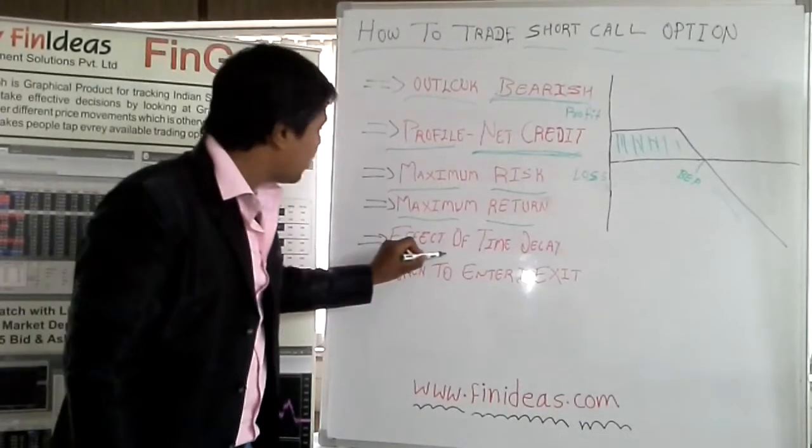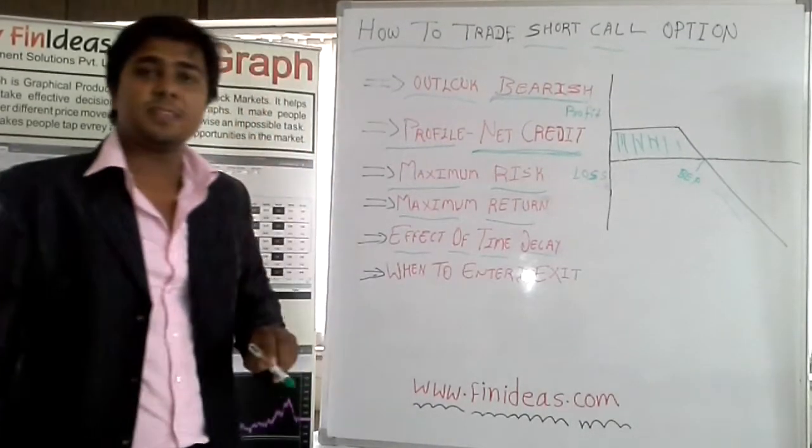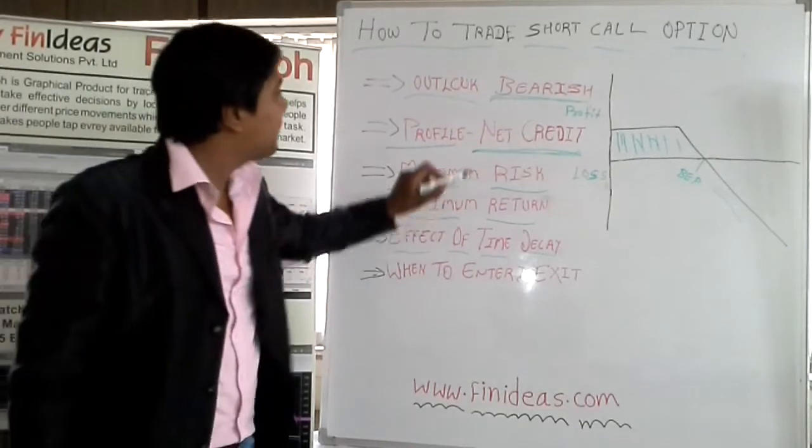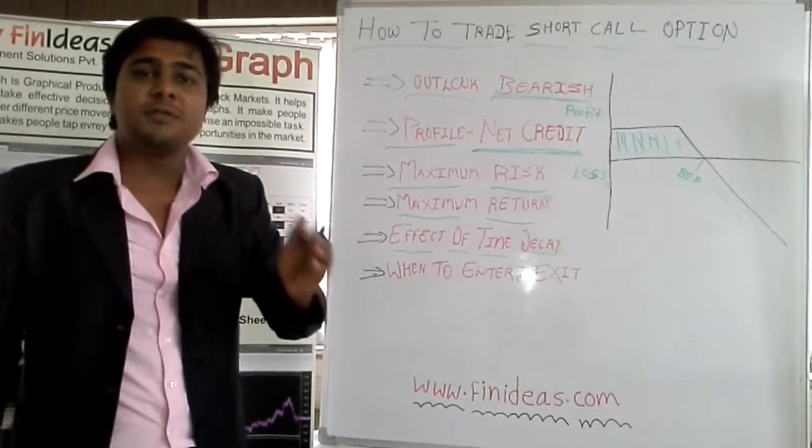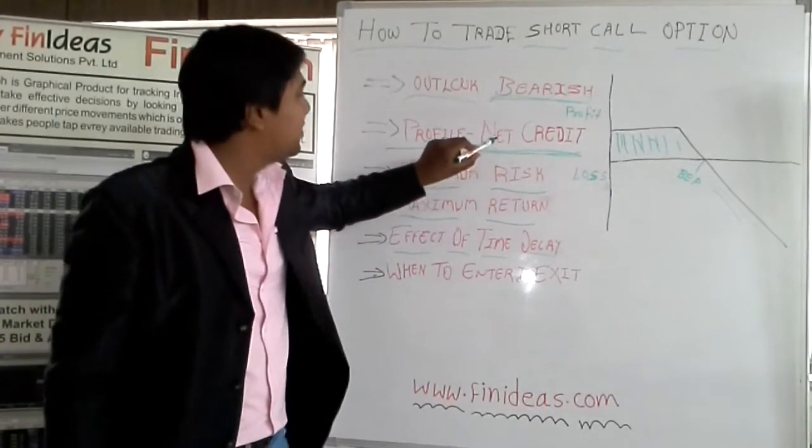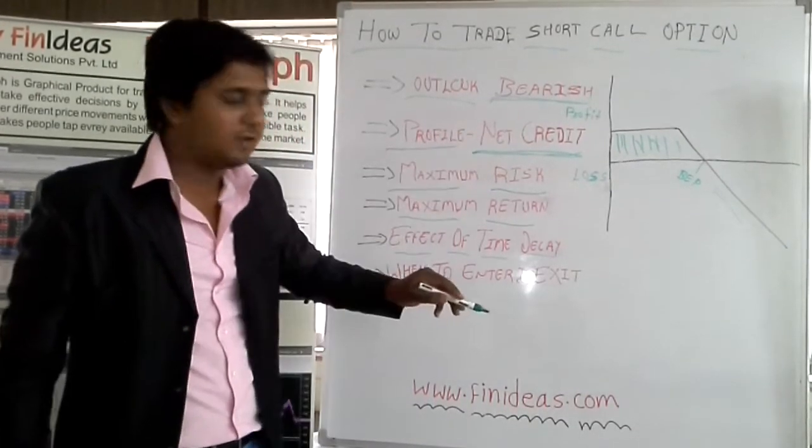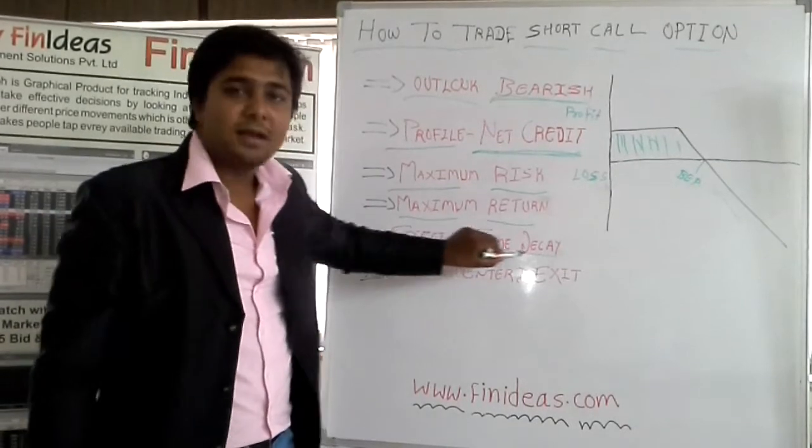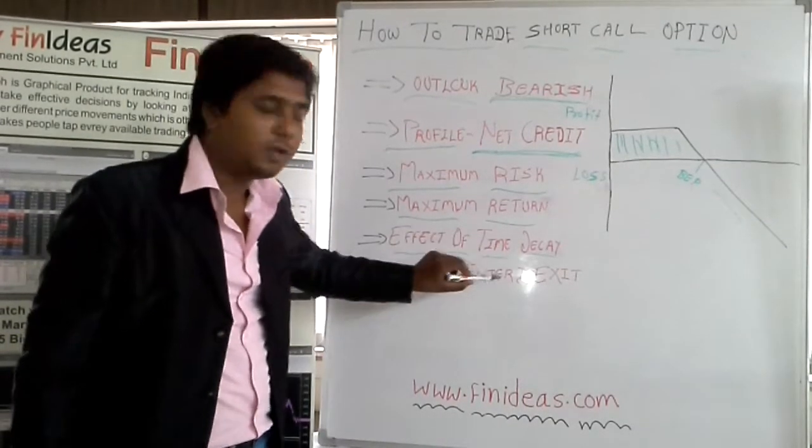The effect of time decay. Time works as a friend for you. As maturity comes nearer you will receive time value. That means the premium value that you will receive by time decay, so time works in your favor over here.